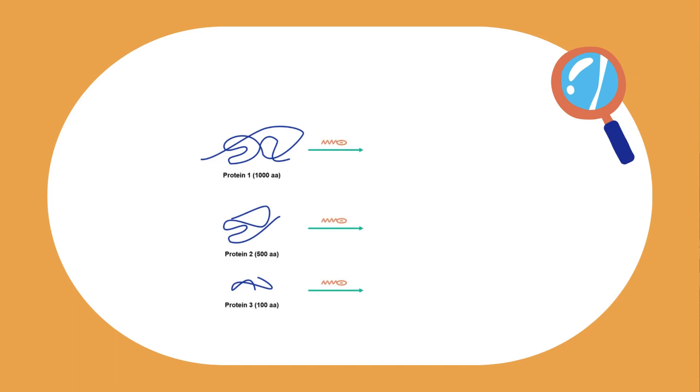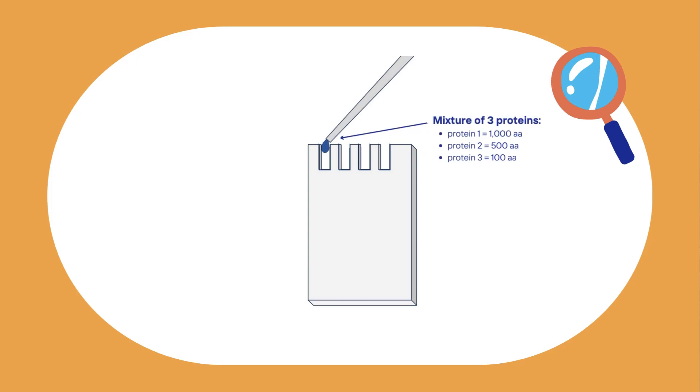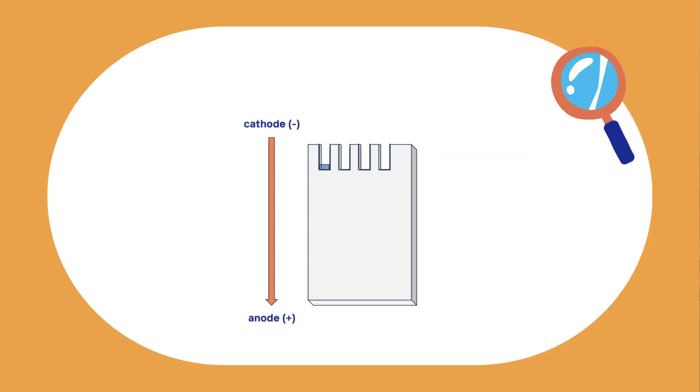The proteins are mixed with SDS, which unfolds and coats them, and then they're transferred to the well in the polyacrylamide gel, and an electric field is applied with the positive electrode at the bottom. The electric field causes the proteins to migrate through the gel toward the positive electrode. The smaller the protein, the faster it will migrate. By using proteins of known size, we can use these gels to determine the size of proteins in a mixture. As an extra bonus, the thickness or density of the band is also proportional to the relative amount of each protein in the mix.